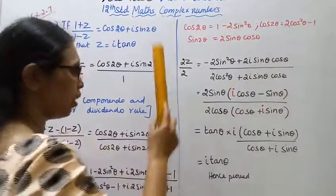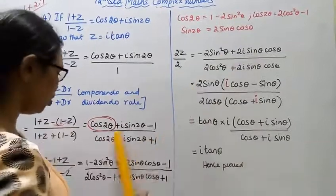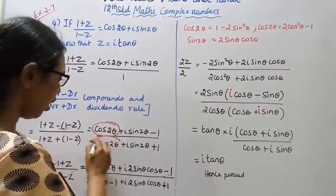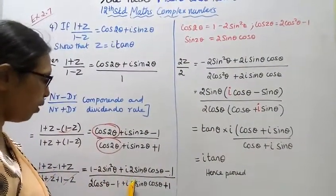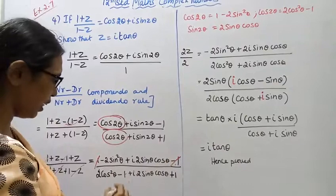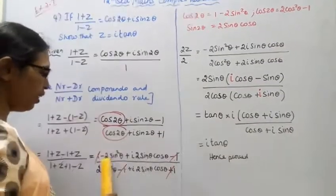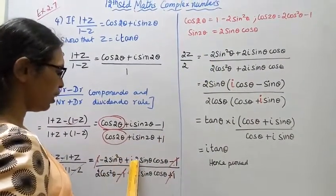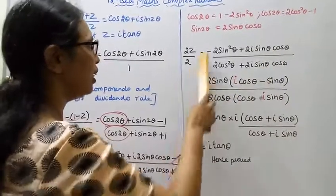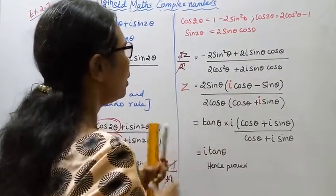Substituting these identities: cos2θ becomes 1 − 2sin²θ, and sin2θ becomes 2sinθ·cosθ. After substitution, the numerator becomes −2sin²θ + 2i·sinθ·cosθ, and the denominator simplifies accordingly. The 2s cancel out.